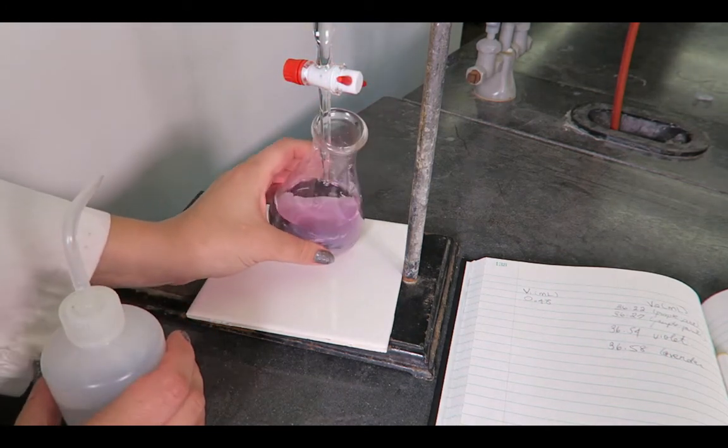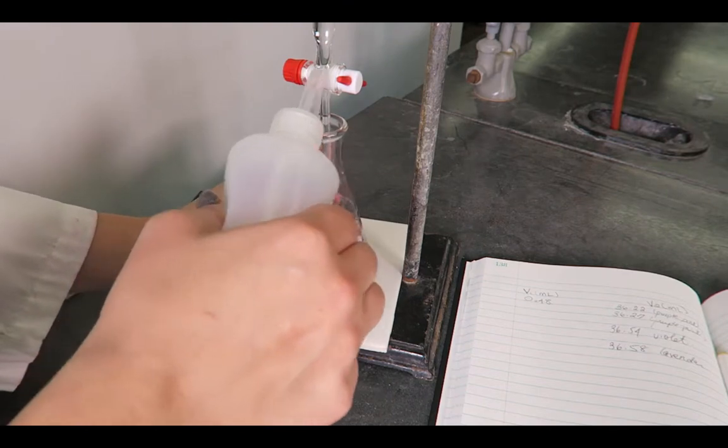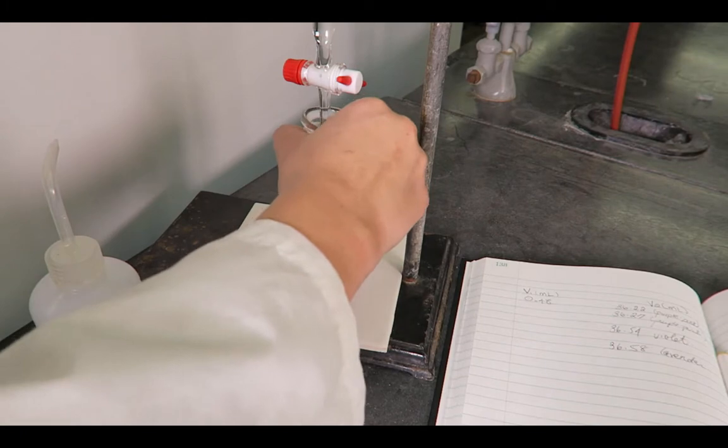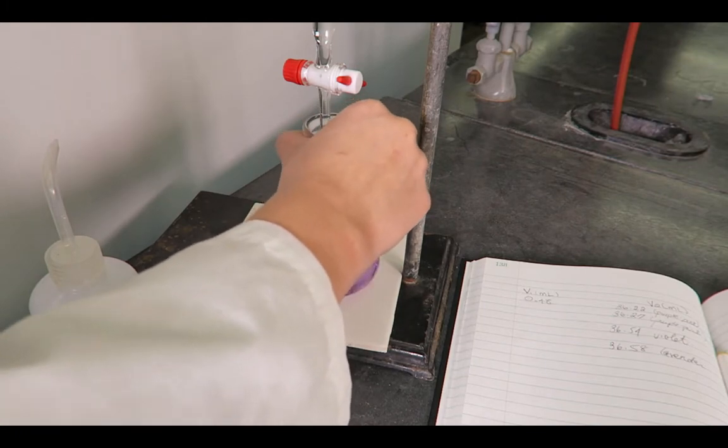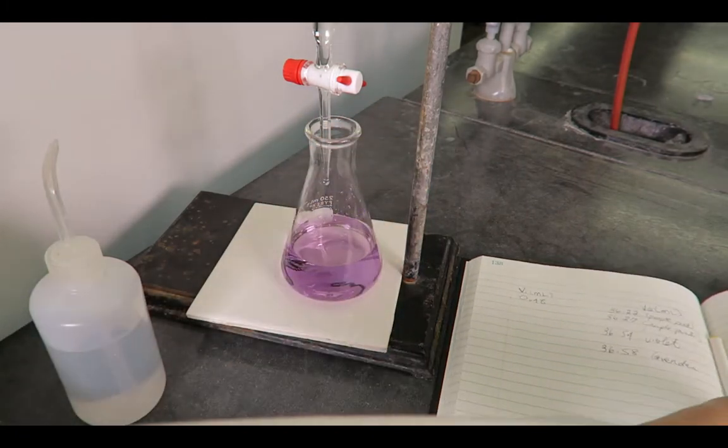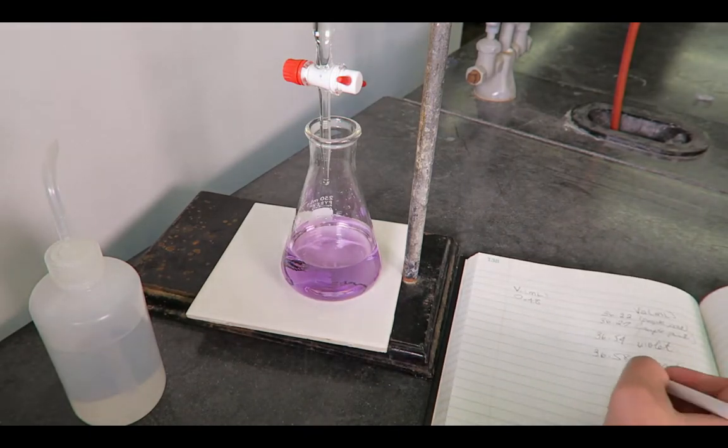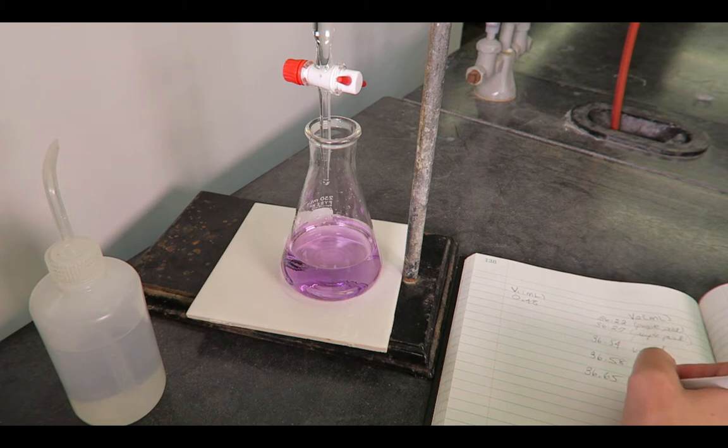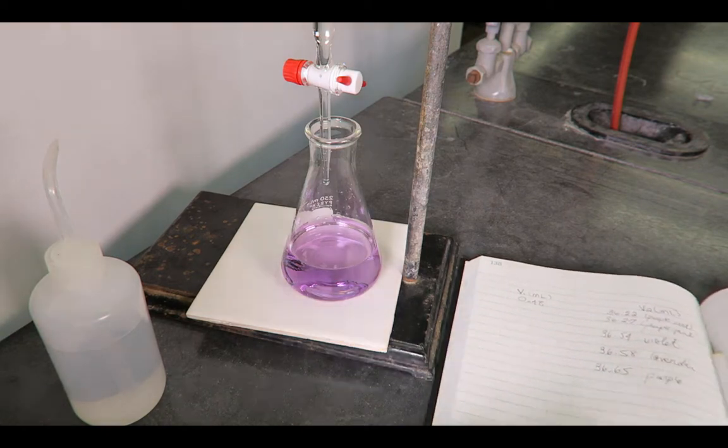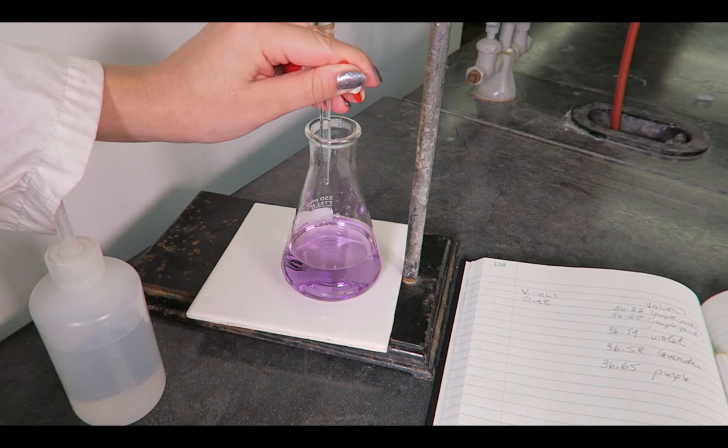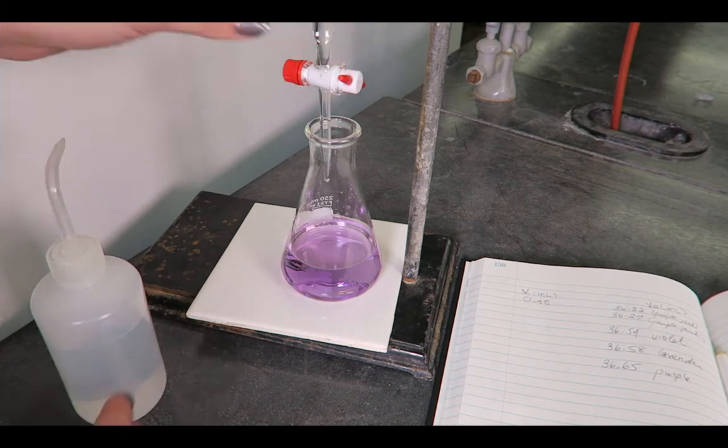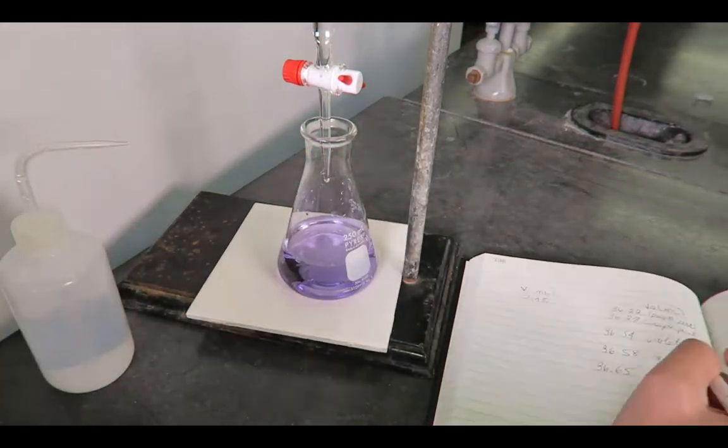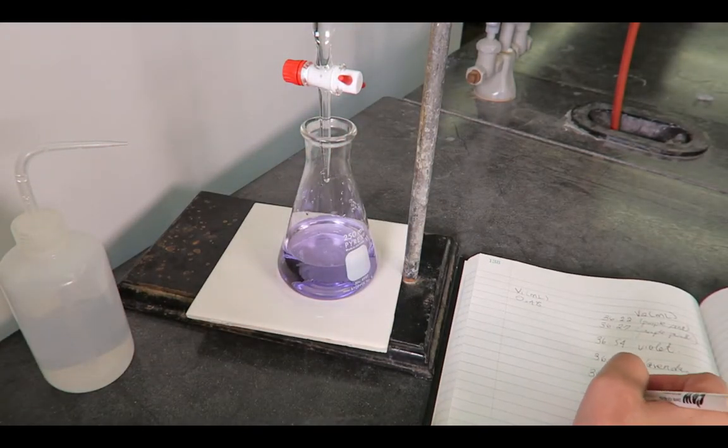Add titrant drop-wise, touch off the drop on the side of the flask, and rinse down the flask with deionized water. Read the burette and record the volume and color. Continue adding drops and recording the burette volume and indicator color in your laboratory notebook until the indicator color remains constant.